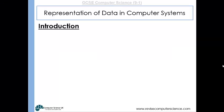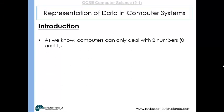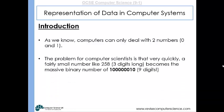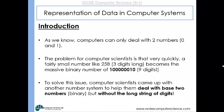This video will take a look at the hexadecimal number system. We already know that computers can only deal with two different digits, zero and one. They're made up of switches that can only have two possible states. The problem for computer scientists is that very quickly, in binary, fairly small numbers like the denary 258, which is only three digits long, start becoming a huge string of zeros and ones — nine digits in this case. And to solve the problem, computer scientists came up with another number system to help deal with these binary numbers, but without the long strings of digits.